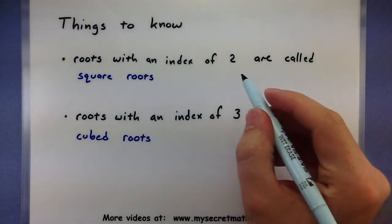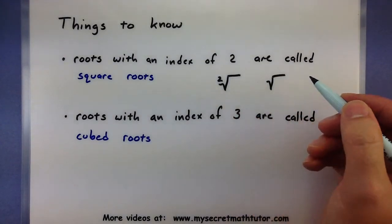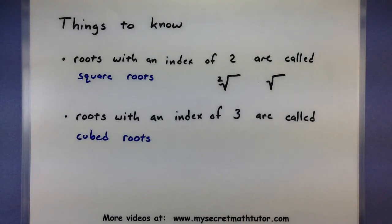Also when we do something like a radical with an index of 2, we often leave off that index. Technically we could put it in there, but we usually leave it off.